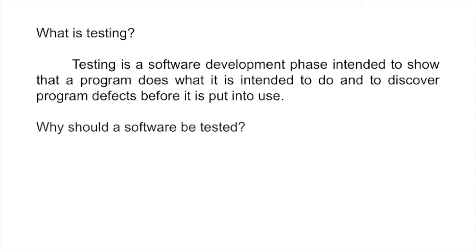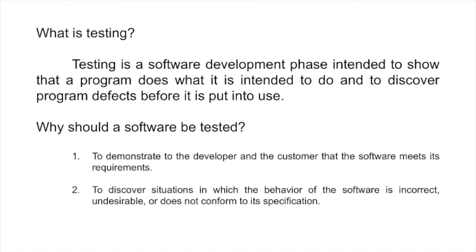Why should a software be tested? The two main goals of software testing are: one, to give a proof to the developer and to the customer that the software meets its requirements; and two, to find situations wherein the software behaves incorrectly or undesirably or when it does not conform to its specifications.